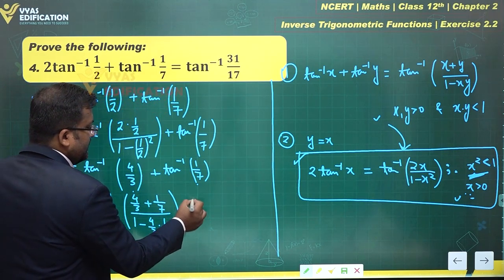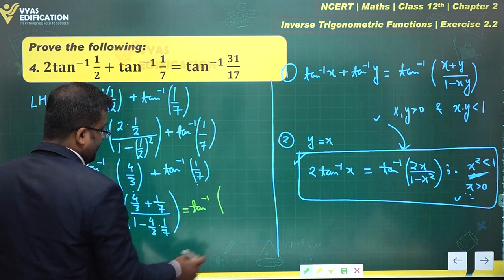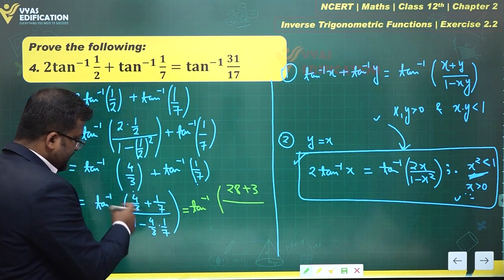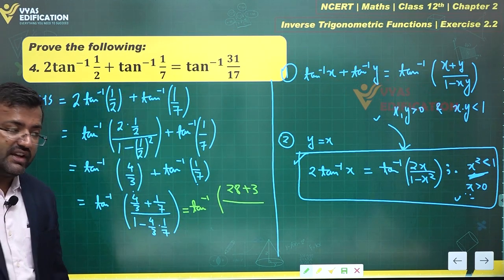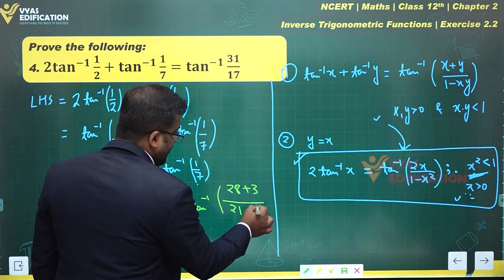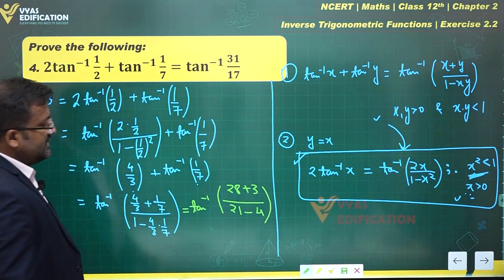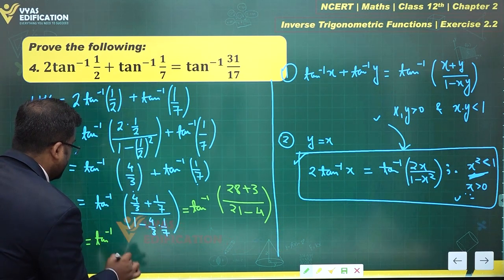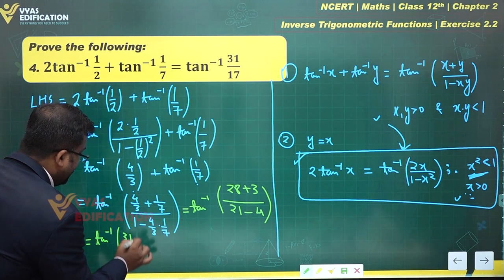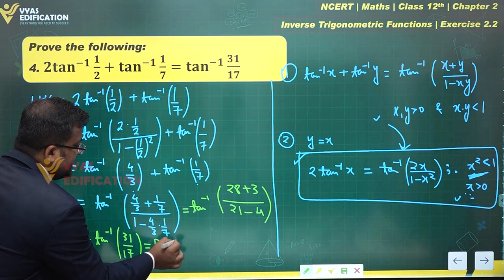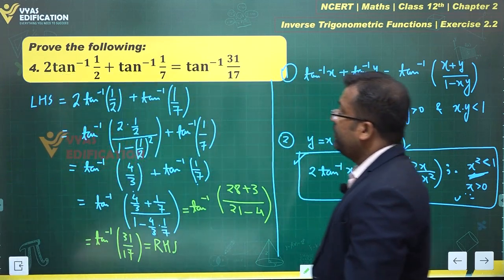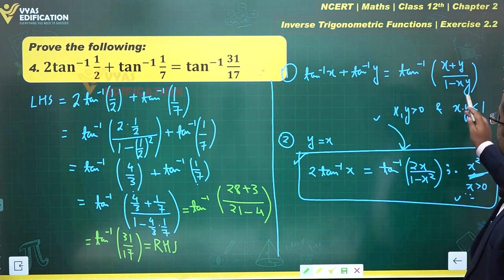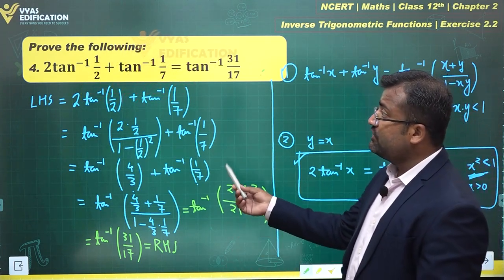Simplifying: the numerator is 4/3 plus 1/7, which gives (28 plus 3) over 21 equals 31/21. The denominator is 1 minus 4/21 equals 17/21. The 21s cancel, giving tan inverse of 31 over 17, which is the RHS. That's the complete proof of this question using these two results.